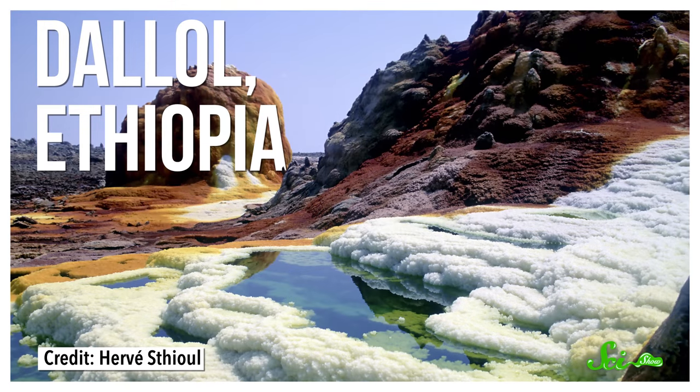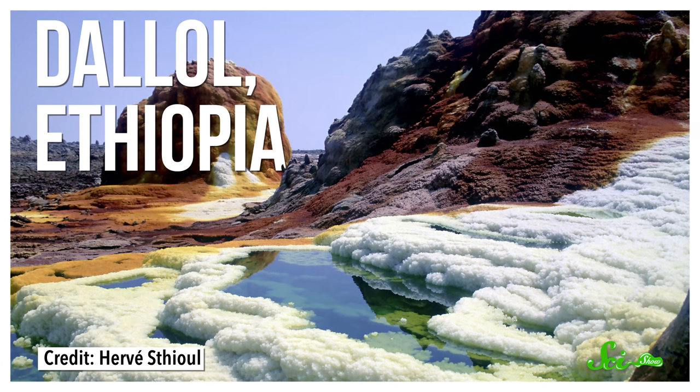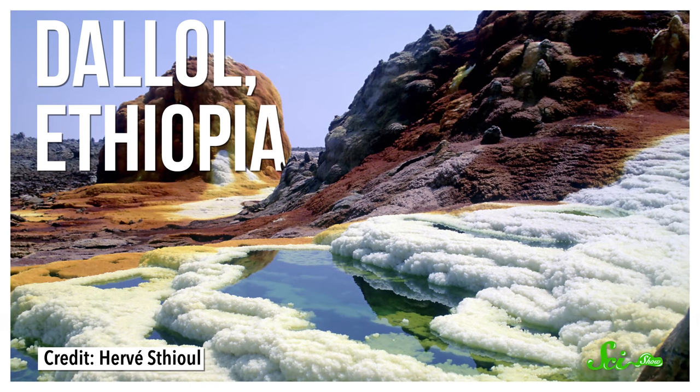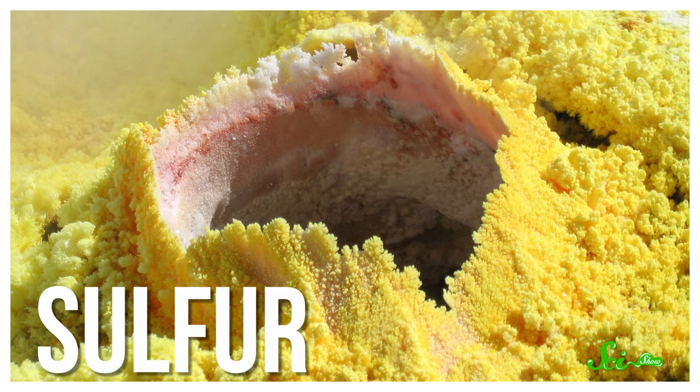Lots of volcanoes spit up gaseous sulfur compounds, like the Dalal volcano in Ethiopia, so blue flames aren't unique to this crater. But Kawa Ijen happens to have spectacular amounts of sulfur, enough to support a huge mine. The miners are after the bright yellow chunks of solidified sulfur rock.